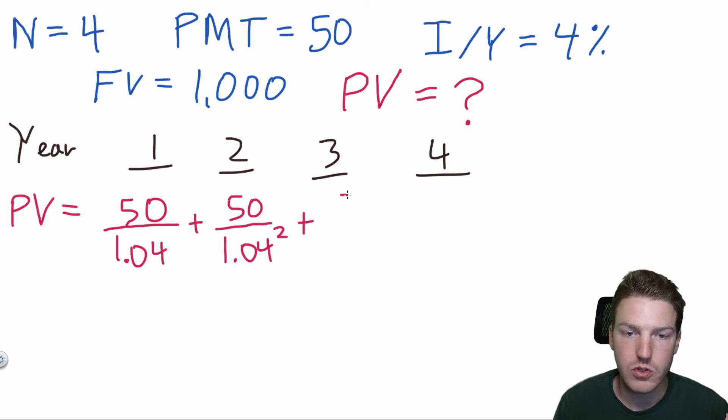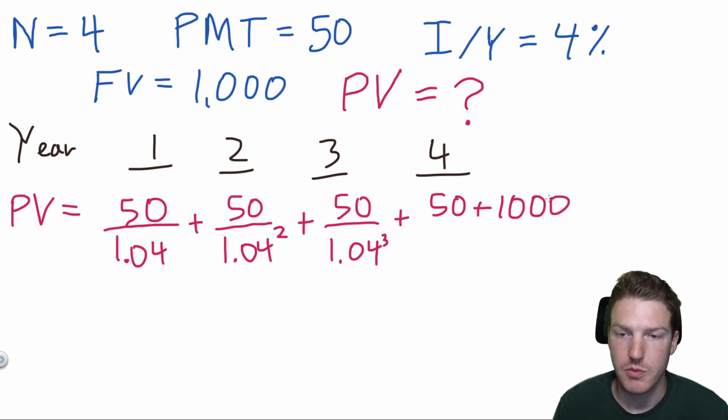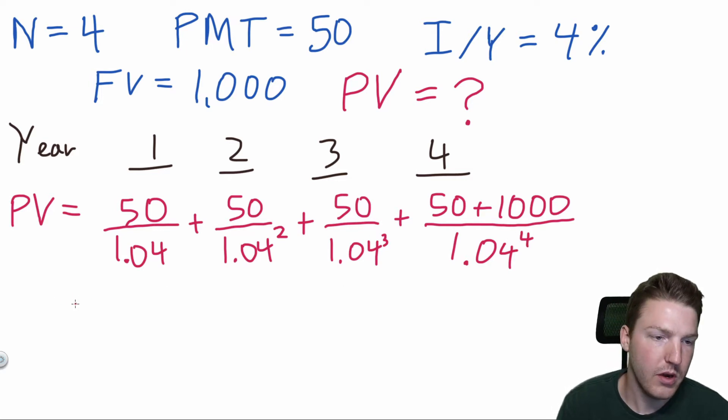Now for year three, it's also going to be $50 payment, but this time we have to discount it back three years. And then finally in year four, not only are we going to receive our payment of $50, but we're also going to receive the $1,000 notional amount. So this will actually be $1,050. And this time we have to discount it back four years. So we put it to the exponent of four.